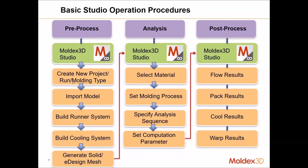Initially, we set up the project, import the model, build the runner system, and build the cooling system. Then we create the solid mesh using eDesign solid mesh technology. After that, we choose the material, molding process conditions, analysis sequence, and computation parameters. Once model preparation and pre-process are done, we run the simulation and view the results in post-process.